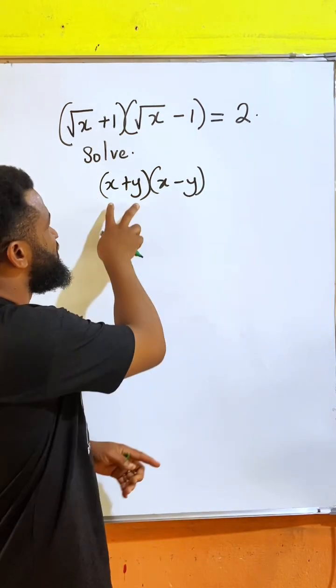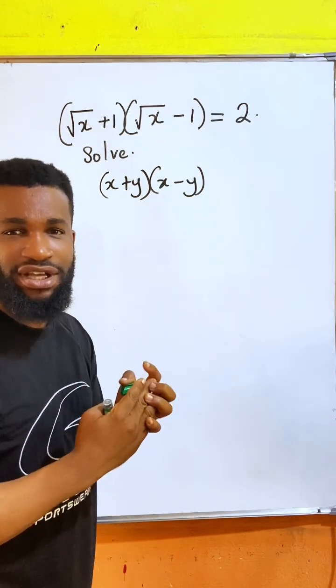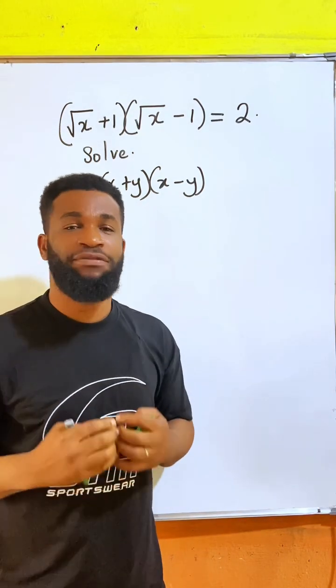Whenever you have the same thing adding, the same thing subtracting, and they are multiplying each other, we can apply the difference of two squares.